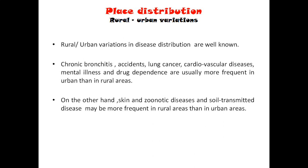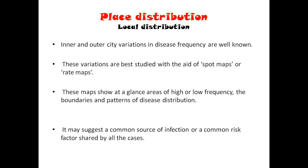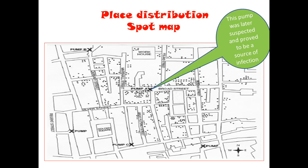For rural-urban variations: certain diseases are very common in rural sectors, like periodontal disease and zoonotic and skin diseases. Dental caries, bronchitis, accidents, lung cancer, and cardiovascular disease are common in urban settings. So there will be variations in disease distribution according to place — rural-urban, national, international, and local distributions.